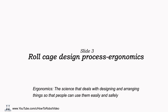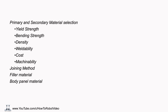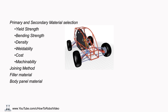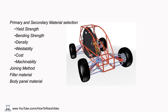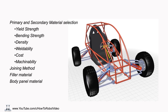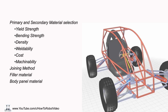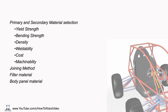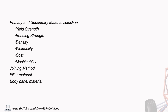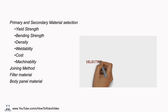Slide 3: Roll cage design process and ergonomics. In this slide, we have to describe the process of roll cage designing. First, select roll cage material based on yield strength, bending strength, density, buildability, cost, and machinability. Based on the material selected — it can be AISI-1018, AISI-4130, or carbon fiber tubes — calculate the required dimensional parameters: outer diameter and material thickness. For material selection calculations, check out my previous video, with the link in the description. Then, with material and dimensions selected, find suitable joining methods, select the filler material, and select a suitable body panel material.